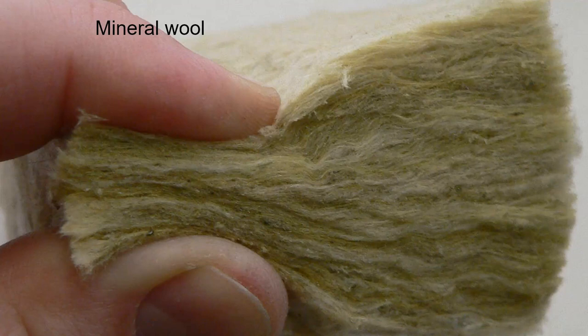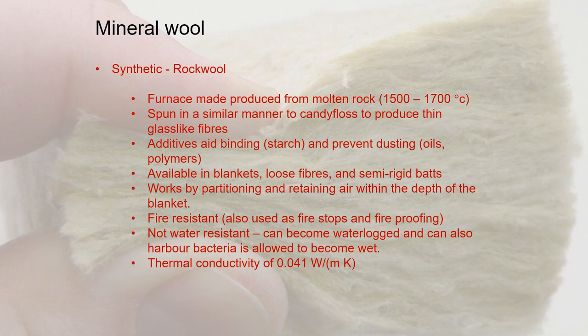Mineral wool is probably the first type you would think of when thinking about insulation. This is what you might have in your loft. It's made from molten rock that's spun like candy floss with some additives — oils and polymers that prevent it breaking up into little particles and making dust. Effectively it works as a material that partitions and retains air: a loose net of fibres held together to trap air within it. The thermal conductivity is shown at the bottom of the slide, and the lower that number, the better it is at resisting heat — higher numbers mean it conducts more heat.